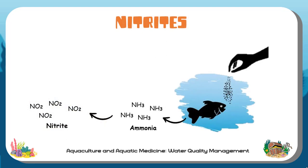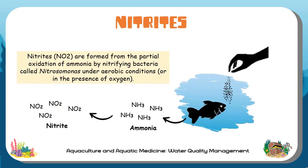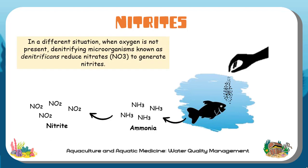Another component of nitrogen is nitrite. It is formed from the partial oxidation of ammonia by nitrifying bacteria called Nitrosomonas under aerobic conditions, or in the presence of oxygen. In different situations — for example, when oxygen is not present — denitrifying microorganisms known as denitrificants reduce nitrates to generate nitrites.